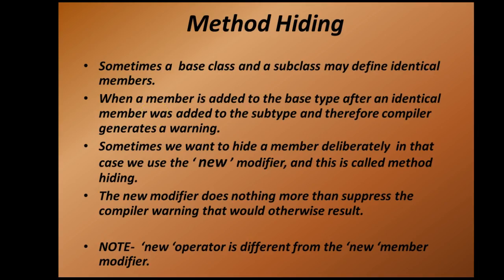What do you mean by method hiding? Sometimes a base class and a subclass may define identical members. By mistake you might have named two methods with the same name in both the base class and the derived class. By methods of the same name I do not mean method overloading — that's a very different concept. I'm talking about accidentally having two methods with the same name. When this happens, the C# compiler generates a warning.